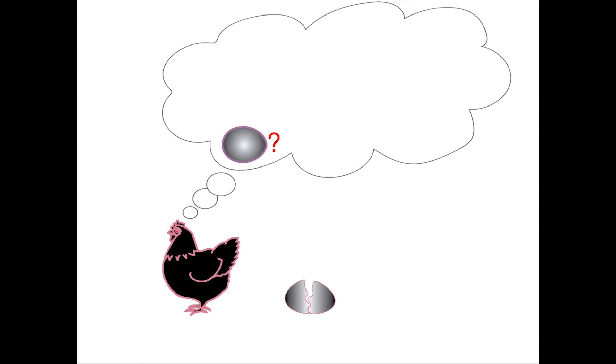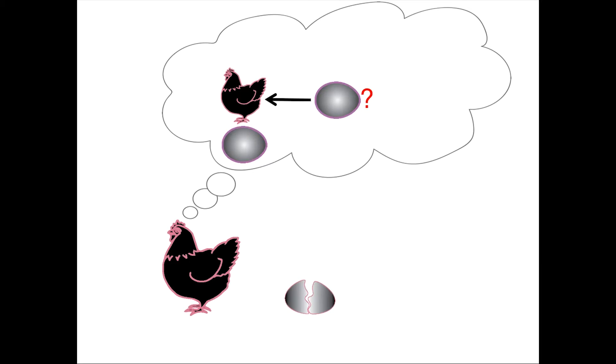Complex organisms can arise from simpler beginnings, like this chicken from the egg. But where did the egg come from? Its parent chicken. Where did the parent come from? Its egg. And where did that egg come from?